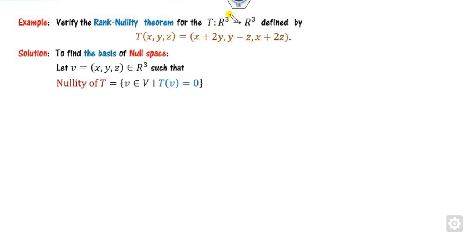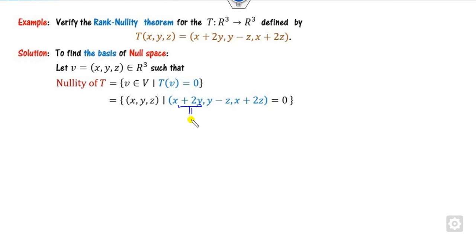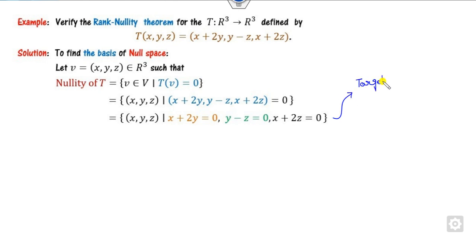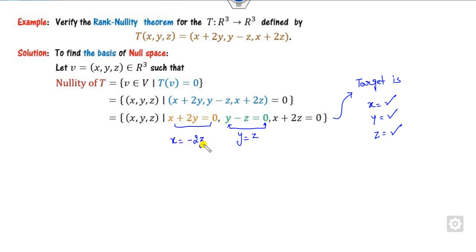First we try to find the null space. The null space is the collection of all elements in the co-domain, which is R³. Any element in R³ is (x, y, z) such that T(v) = 0. T(v) becomes zero when each component is zero. From those equations, we get y = z, and substituting y = z gives x = -2z. So we express x and y in terms of z.